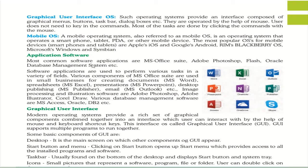There are various types of application software: operating system, and then application software like MS Office, Adobe Photoshop, and Oracle database management system. These software applications are used to perform various tasks in a variety of fields — MS Office is used in small businesses for creating documents, spreadsheets, presentations, and email. Adobe Photoshop is image processing and illustration software. The modern operating system provides a rich set of graphical components combined into an interface which users can interact with using mouse and keyboard shortcuts — called graphical user interface.